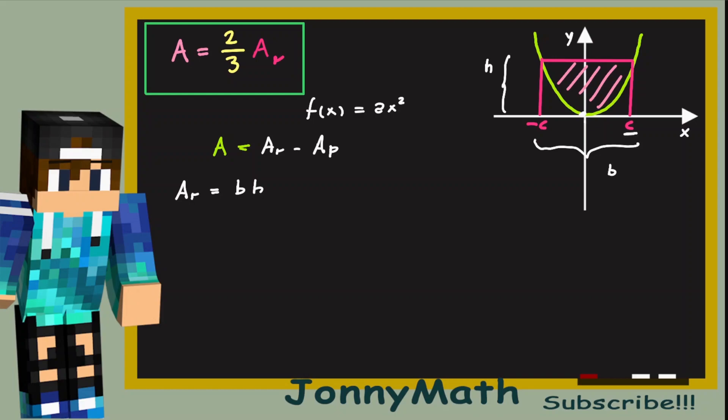But this point has coordinates c and minus c. You can call it whatever you like. I chose c, but it's not important. And if this length is c, b is going to be equal to 2 times c.